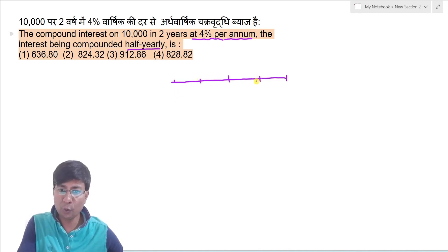Toh humara jo new year hoga na, woh kitne din ka ho jayega, woh ho jayega six month ka. Six month ka four year jaisa time behave karega, ye clear hai.